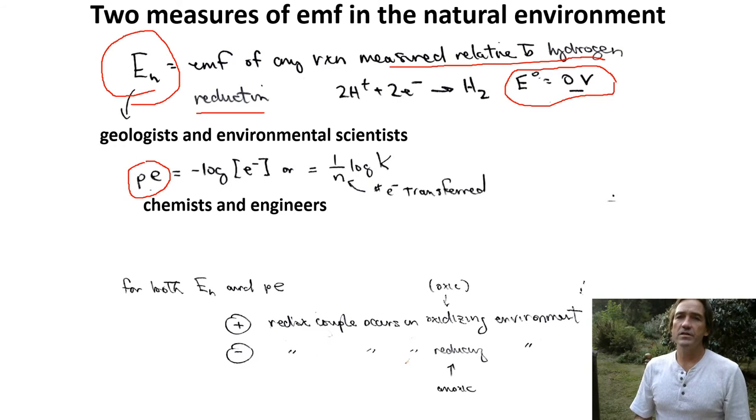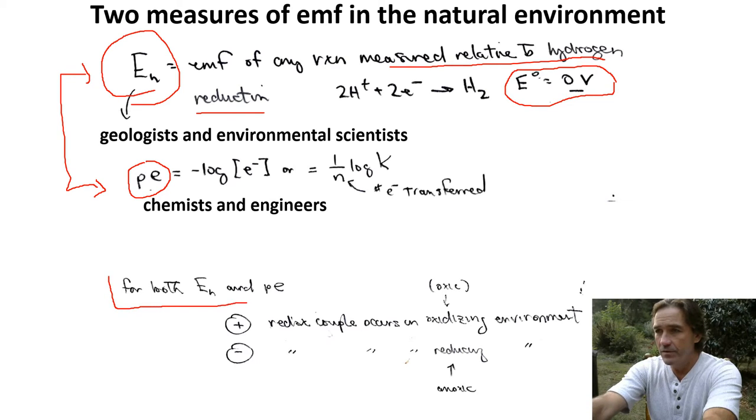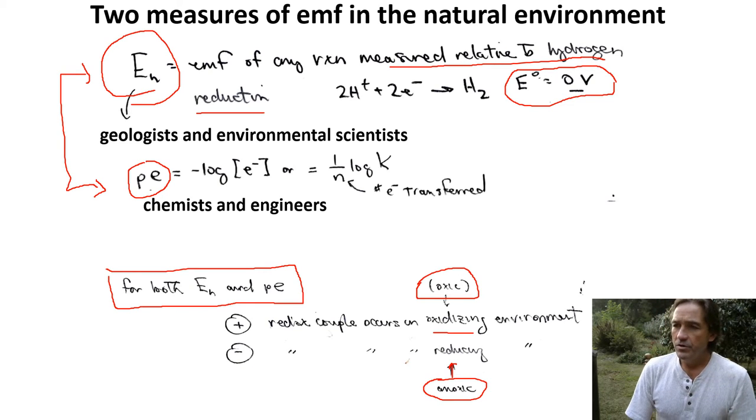Chemists and engineers use PE, just the negative log of the electron concentration. Both of these are on a relative scale, so it's not important what the number is specifically. It's more where this redox couple is relative to other processes, other reactions. For both cases, we can measure whether we have an oxic environment or oxidizing environment or an anoxic environment, which would be a reducing environment.